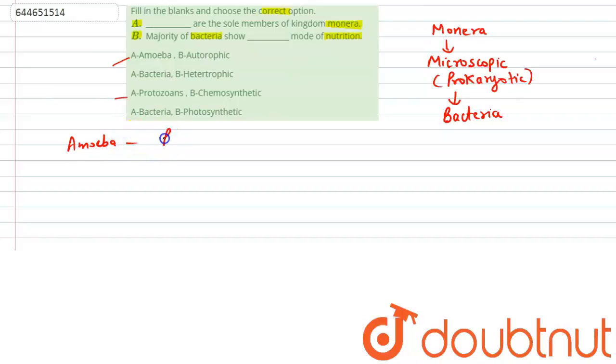And protozoans - they are unicellular organisms, no doubt, but they are not prokaryotic organisms. They are unicellular eukaryotic organisms, similar to bacteria in being unicellular, but they are not prokaryotic. They are eukaryotic organisms. They have a well-defined nucleus, so these options are crossed automatically. Now comes the next option, so here the option is bacteria.